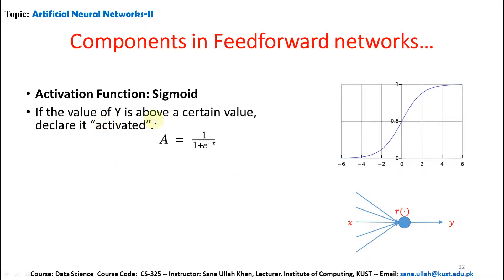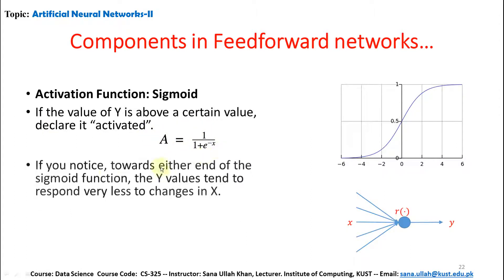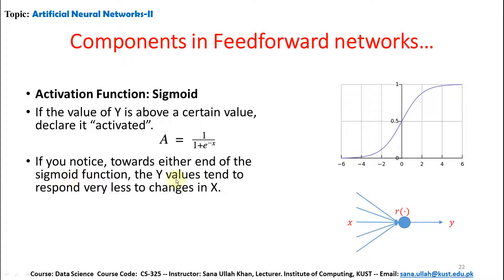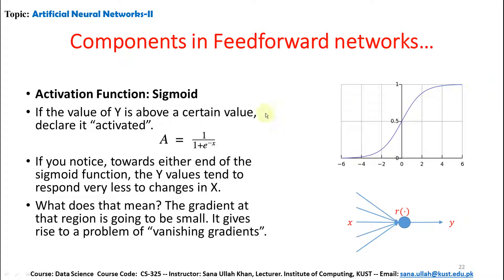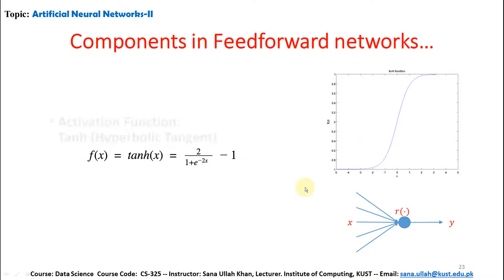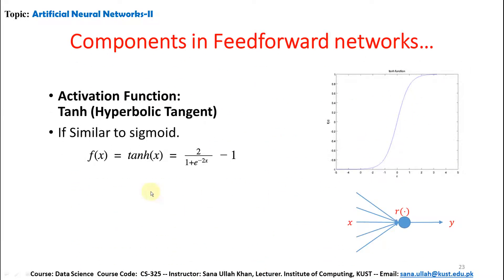The sigmoid function: if the value of Y is above a certain value, declare it activated. A = 1 / (1 + e^(-Z)). Toward either end of the sigmoid function, the Y value tends to respond very slowly to changes in X. The gradient at those regions is going to be small, giving rise to the problem of vanishing gradients. The hyperbolic tangent (tanh) is similar to sigmoid but is tanh(X) = 2 / (1 + e^(-2X)) - 1. It is a scaled sigmoid function.